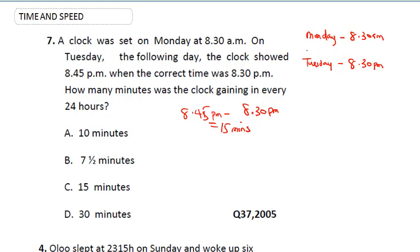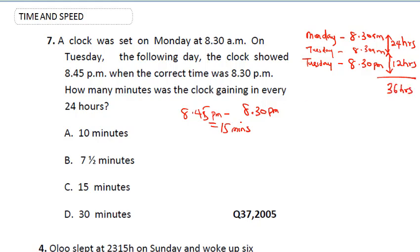Between Monday 8:30 a.m. and Tuesday 8:30 a.m. is 24 hours. Between Tuesday 8:30 a.m. and Tuesday 8:30 p.m. is 12 hours. So the total time spent is 36 hours. That means in 36 hours the clock made an error of 15 minutes.